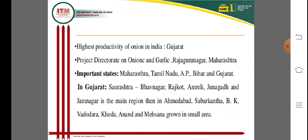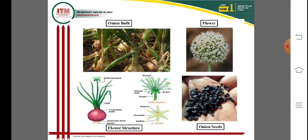In Gujarat, onion-producing regions include Saurashtra districts such as Bhavnagar, Rajkot, Amreli, Junagadh, and Jamnagar. Other regions include Mahemdabad, Sabarkantha, Vadodara, Kheda, Anand, and Mahesana as smaller onion-producing areas. The different parts of the onion include the onion bulb, onion flowers, and onion seeds, used at different stages of production.